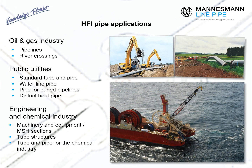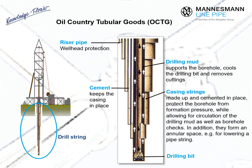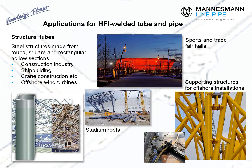Application areas for HFI welded steel pipes include pipelines for the oil and gas industry, river crossings, pipes for public utility projects for gas, water and district heat supplies, as well as sewer pipes and piping systems for engineering purposes and the chemical industry. A cross section through an oil field drill pipe string illustrates the wide variety of tube and pipe products used in the oil and gas sector. Further applications include steel structures made from round, square and rectangular tubes for the construction industry, shipbuilding, crane construction, offshore wind turbines, and many fair and exhibition buildings, sports centres and stadium roofs.